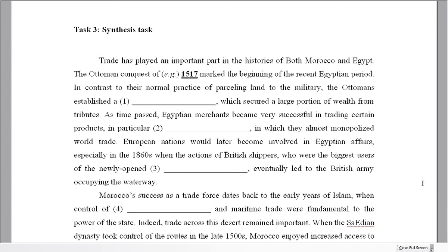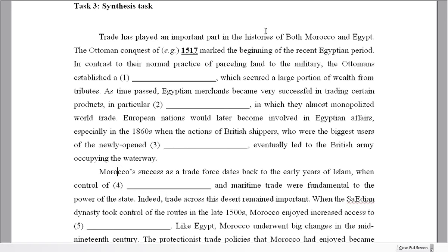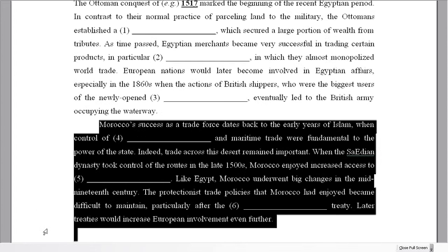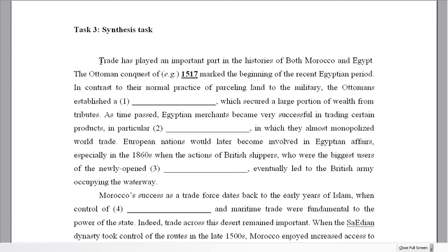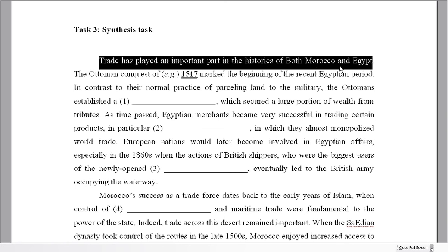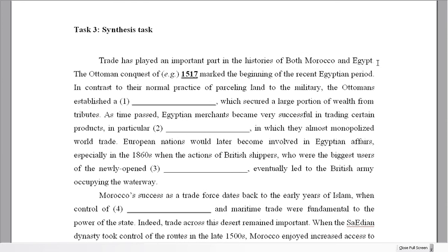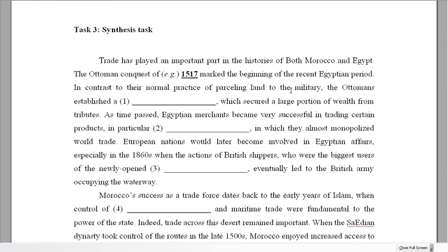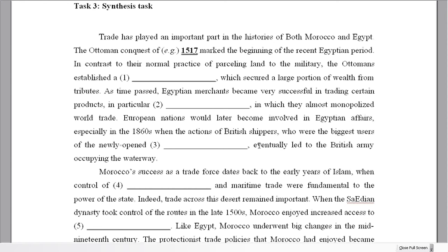Let's think about this one example. We've got one paragraph here and one paragraph here. So why is it organised in this way? Let's look at the first sentence: 'Trade has played an important part in the histories of both Morocco and Egypt.' It's giving us the idea that we need to look at both texts. It's organised in two paragraphs for a reason. When I skim over the first paragraph, I keep seeing 'Egyptian' — the Egyptian period, Egyptian, Egyptian. So this paragraph might be only about the Egypt text.